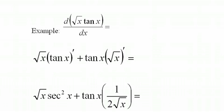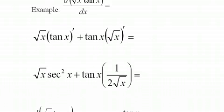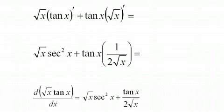I can bring the tangent up on top here and we have our solution. The derivative of the square root of x times the tangent x equals the square root of x times secant squared x plus the tangent x over two times the square root of x.